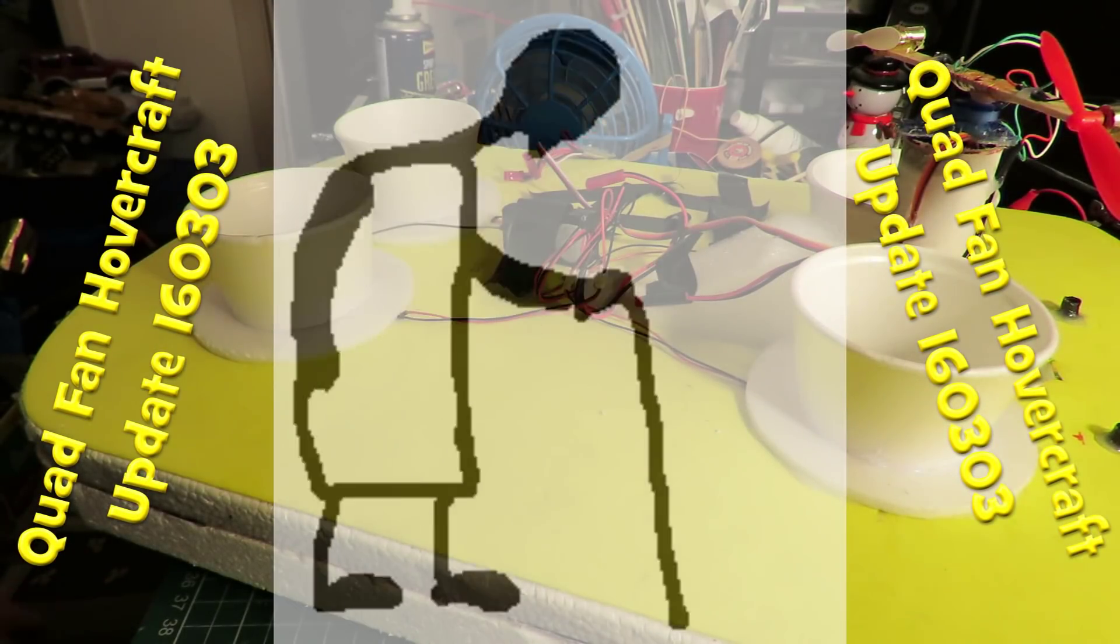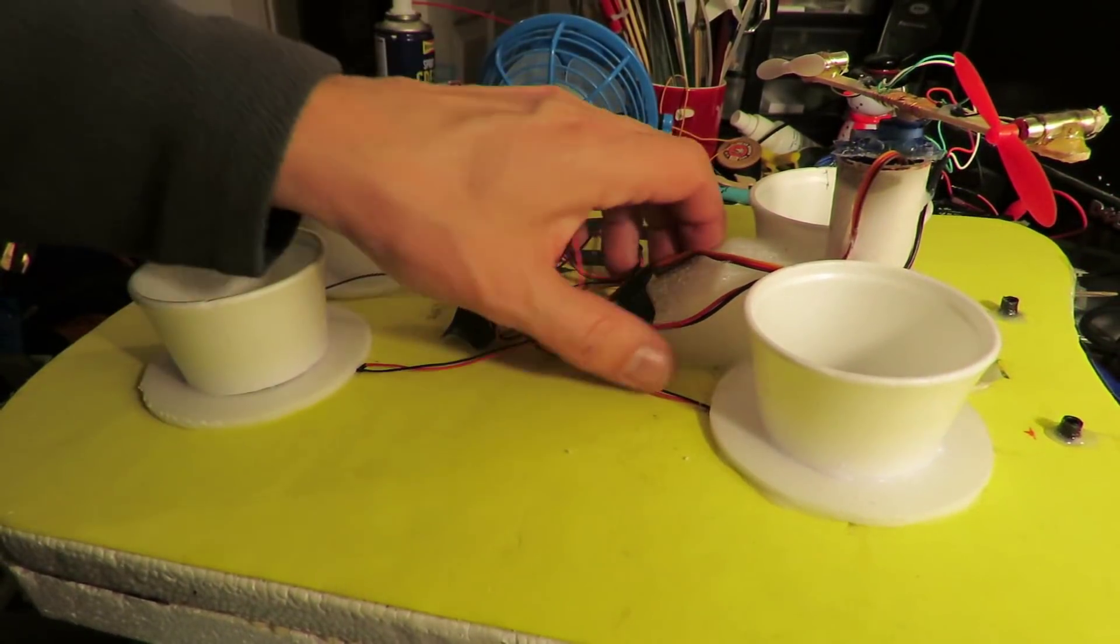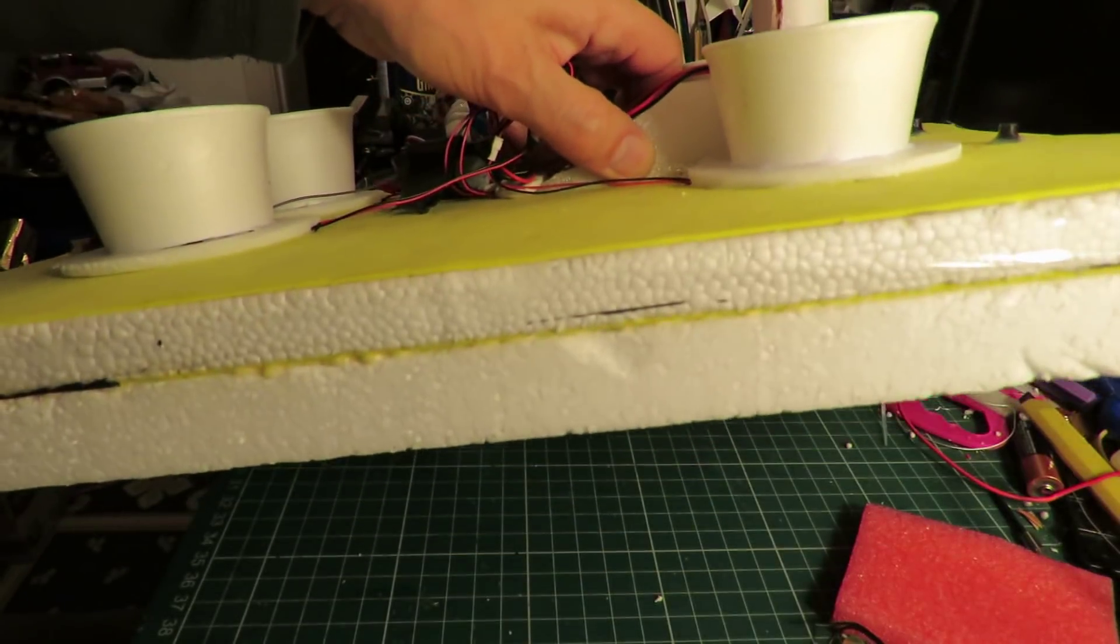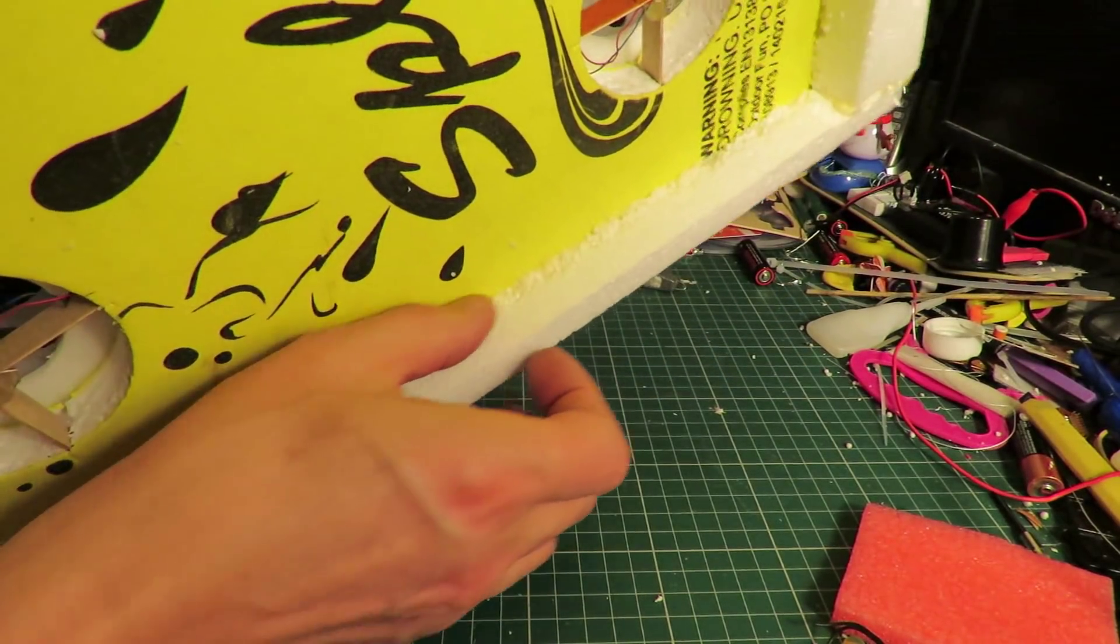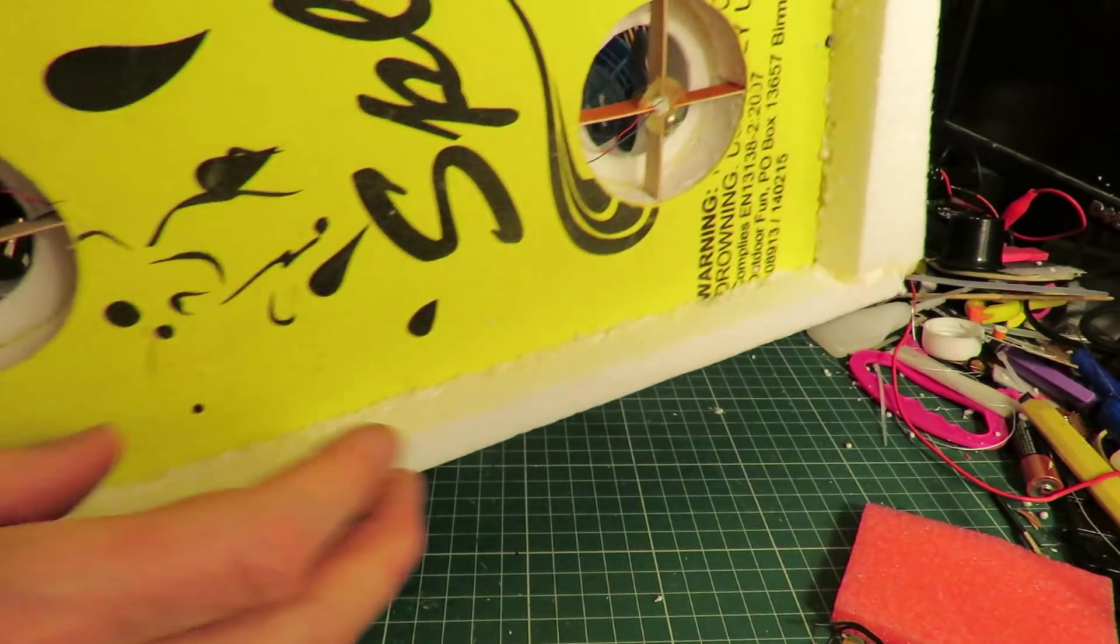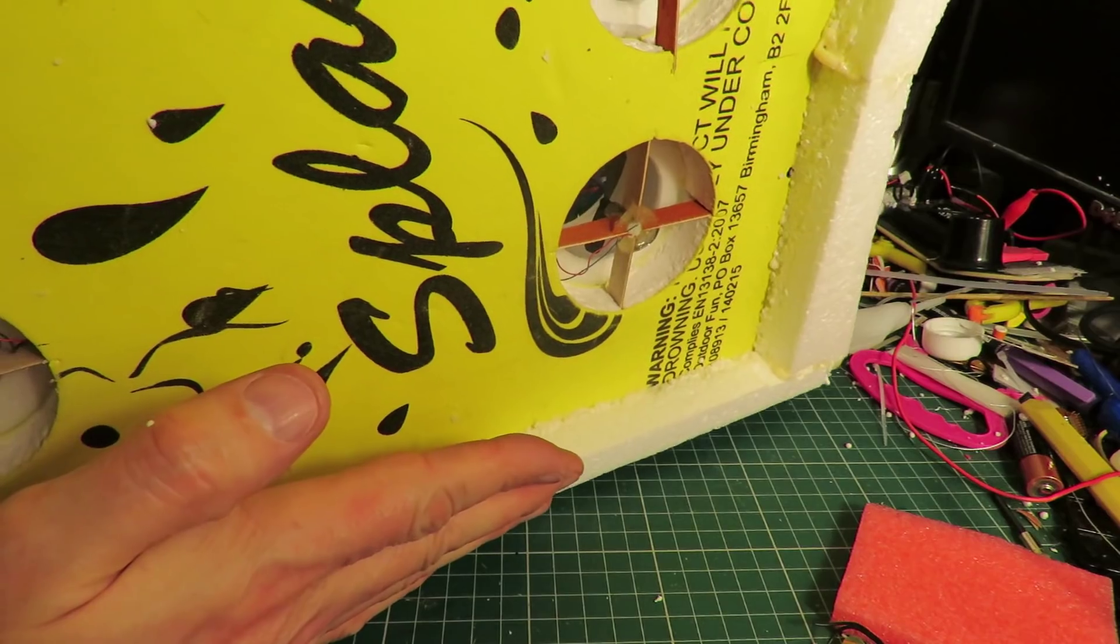Hi guys, just a quick update on my quad fan hovercraft. I keep doing little odds and ends to this over the months and this time I'm putting a wall around the underside here to give us a gap between the flat bottom and where the ground is.